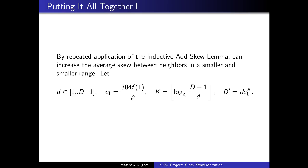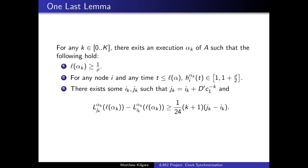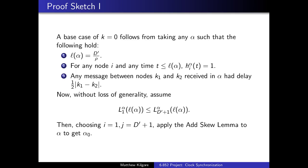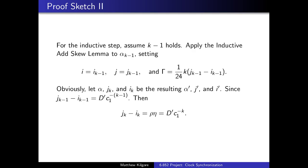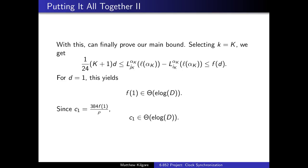By repeated application of inductive add skew, this means we can increase the average skew between neighbors in a smaller and smaller range. Let d be in [1..D-1], c_1 = 384f(1)/ρ, K = log base α of (D-1)/d, and D' = d⋅c_1^K. Then we get this last term codifying the repeated use of inductive add skew. Basically, as always we have those feasibility and possibility conditions, then we can get something of the type by which outlines that increasing interval across iterations to complete the proof, putting things together.